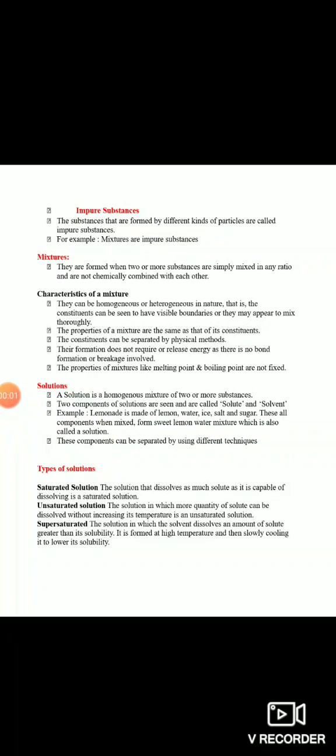Next discuss karenge hum impure substances. Pure substance kya the - jo ek type ke particles ke bane the - to uske opposite impure substance kya honge - jo different kind of particles ke bane honge. Example koi bhi mixture ho sakti hai. Mixture ke case mein hota kya hai ki koi bhi do ya do se zyada particles ek doosre ke saath physically combine ho jaate hain kisi bhi ratio mein. Main characteristic kya hote hain - mixture homogeneous bhi ho sakta hai, mixture heterogeneous bhi ho sakta hai.